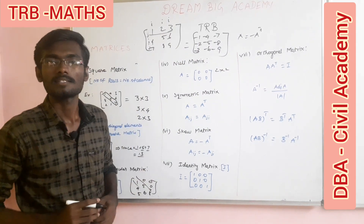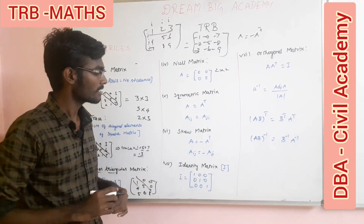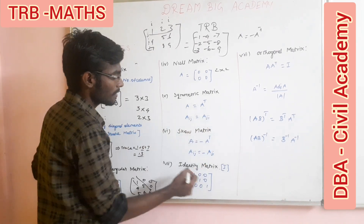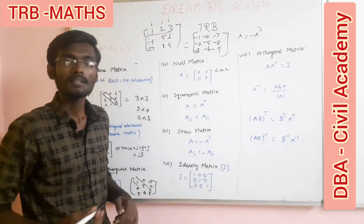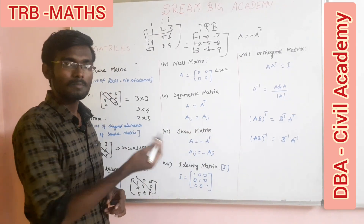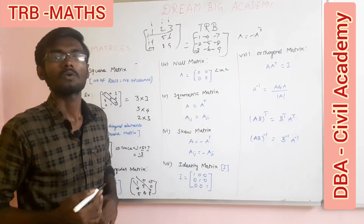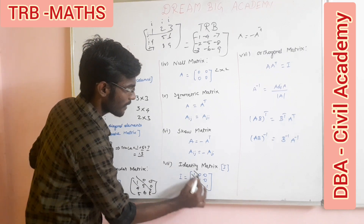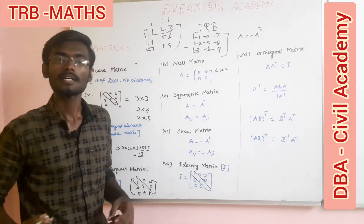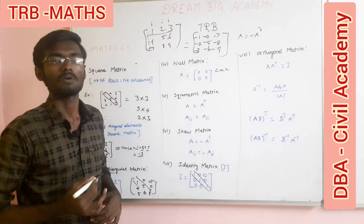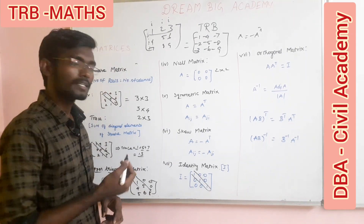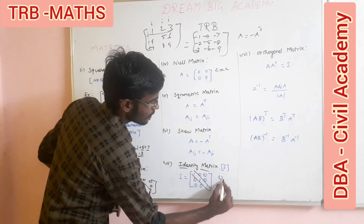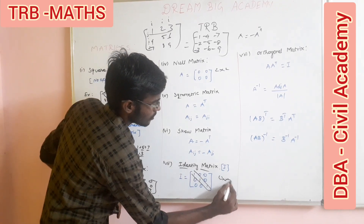Next is the identity matrix. In an identity matrix, all off-diagonal elements are zero, and the main diagonal elements are all equal to one. That is called the identity matrix, also known as the unit matrix.